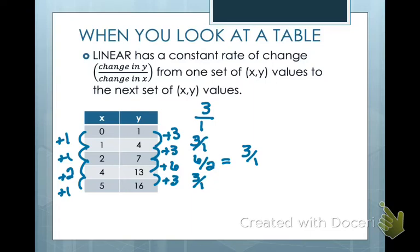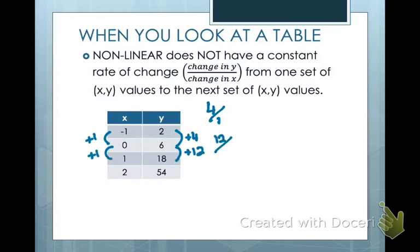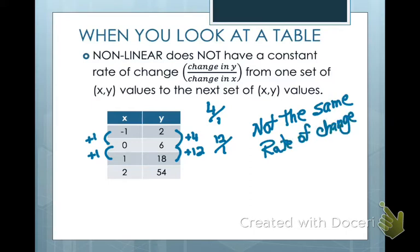Let's look at one that does not have a constant rate of change. Let's check how our y values are changing — it's 4 over 1, so I'm looking for a rate of change of 4 to 1 on every other ordered pair to make it linear. Let's take a look at the other one — this is 12 over 1. I can't reduce 12 over 1, so this is not linear because it does not have the same rate of change, or a constant rate of change.